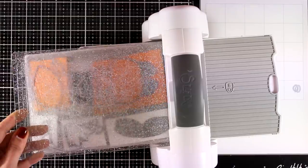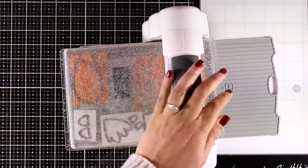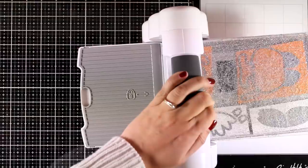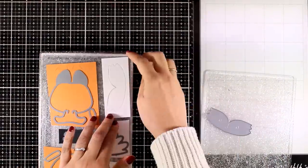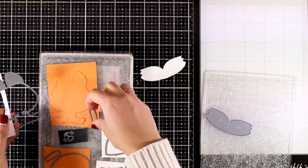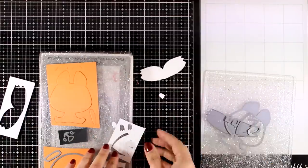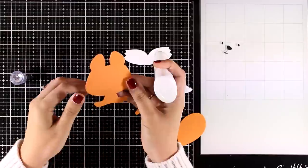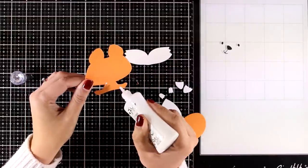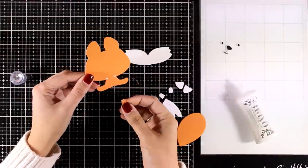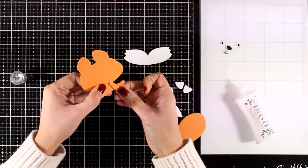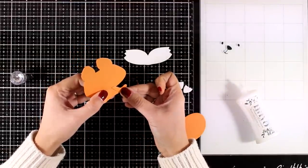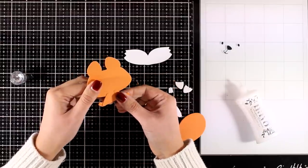For the third and last card for today I am using my Big Shot and I am running through the dies from the Friendly Fox new die that has been released again for the month of January. I have used orange for parts of the fox, white for other parts, as well as black for the nose and the eyes. This is a really fun die to play with your kids or your grandkids and if you love paper piecing I know that you will love this one.